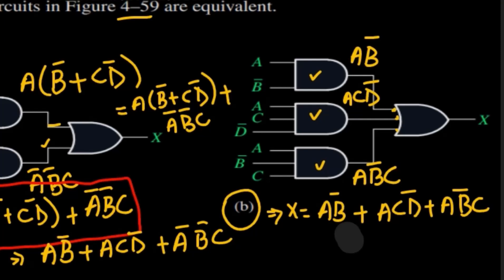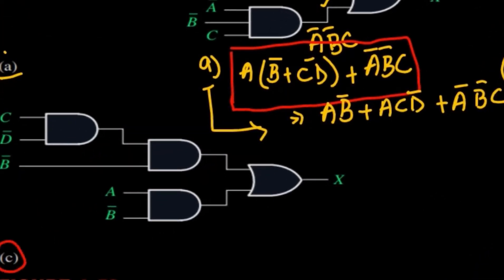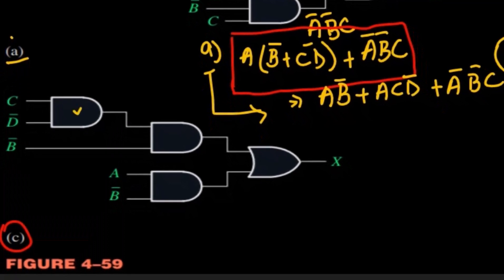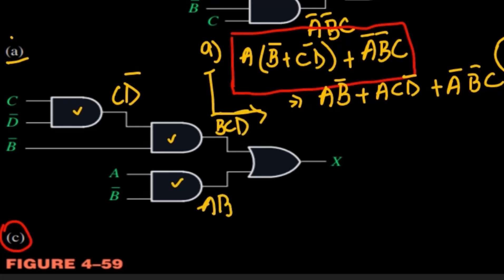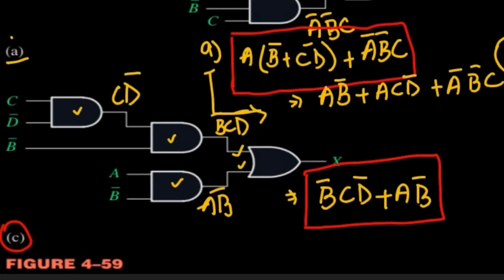Comparing part A and part B: A·B prime vs A·B — these differ. A·C·D prime matches, but part A has A prime while part B has A·B prime·C, so they are not equivalent. For part C, we have three gates and a final OR gate. The outputs are B prime·C·D prime and A·B prime, giving X = B prime·C·D prime + A·B prime.